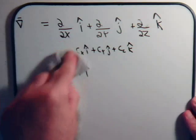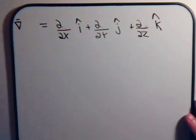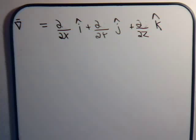But before we close the video, let's ask this question: what if we consider the del operator to be, in and of itself, a vector? Can we perform typical vector operations with it — can we take the dot product of the del operator with other vectors, or the cross product? That's what we want to consider in the videos coming up, where we'll dig out some more interesting properties of the del operator and continue our series on vector analysis.